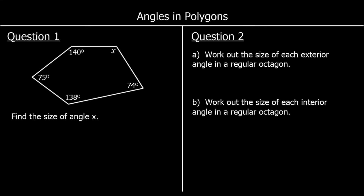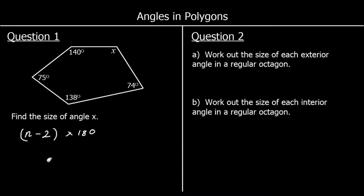Angles in polygons, question one. We're being asked to find the size of angle X and we have a five-sided shape — so a pentagon. What do angles in a pentagon add up to? To find the sum of the angles in a polygon, we take the number of sides minus two, then times 180. For a pentagon: 5 minus 2 is 3, so 3 times 180 is 540. The angles need to add up to 540.